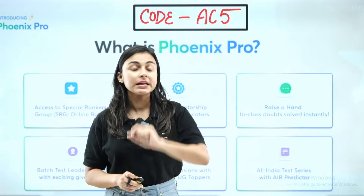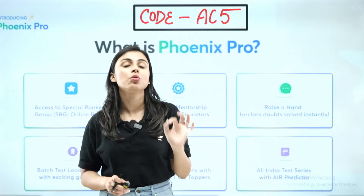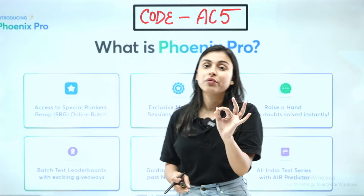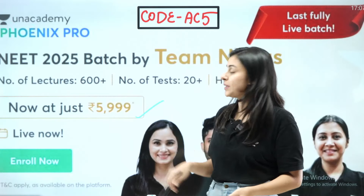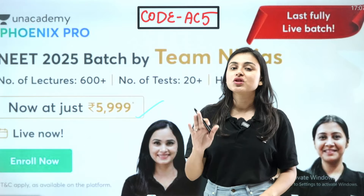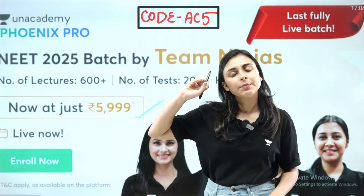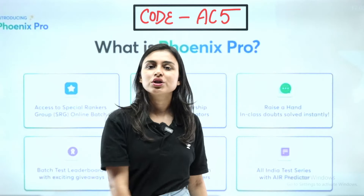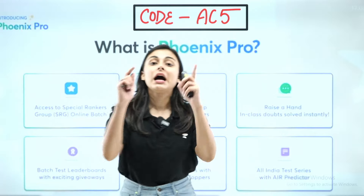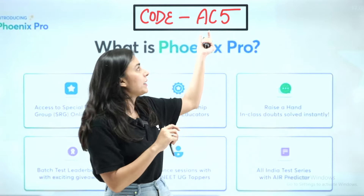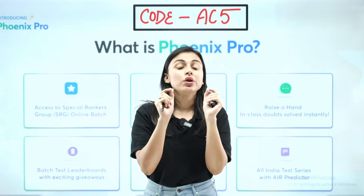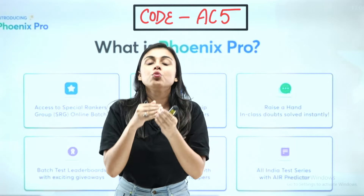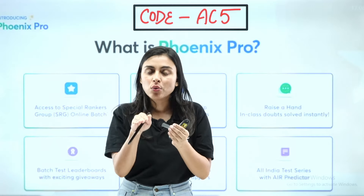An organized course will help you. Children, now is the time to get your preparation on track. Phoenix Pro Batch for NEET 2025 is available for only ₹5,999. You can study from your favorite educator. If you use the code AC5 — A for Anushka, C for Chaudhary, 5 for power — you will come to my mentorship group and I will guide you throughout the year.